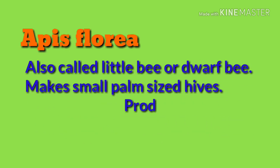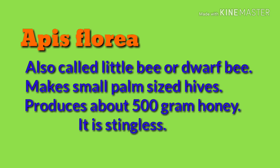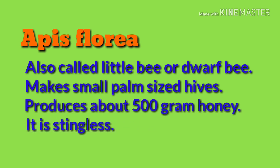Epspluria is the smallest among all bee types. It usually lives in plants, making palm-sized hives with a yield of 500 grams per year.